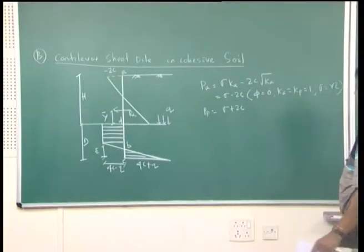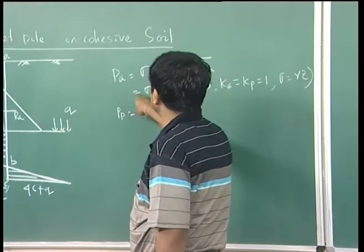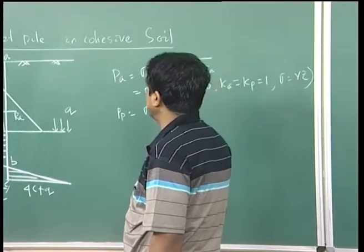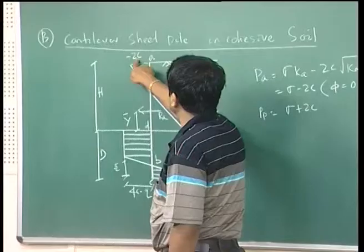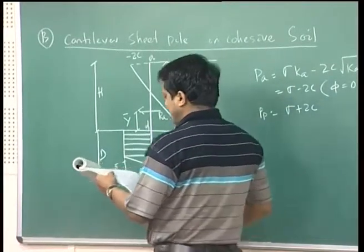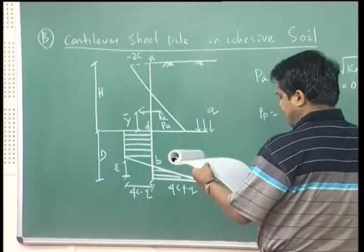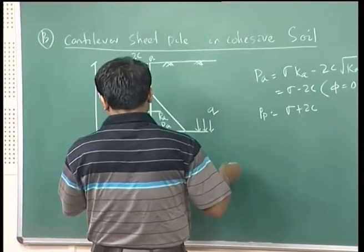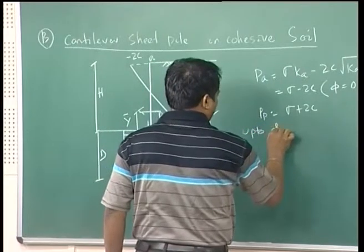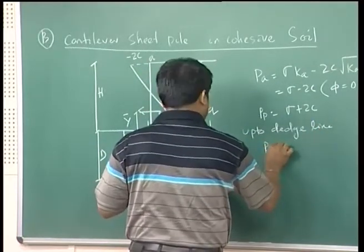The active earth pressure intensity at point A is equal to −2C. Since PA = σ − 2C, the minus sign indicates there will be a tension crack. So this part, which equals −2C, represents tension. The active earth pressure intensity up to the dredge line equals PA = Q − 2C, where Q is the effective overburden pressure equal to γH.